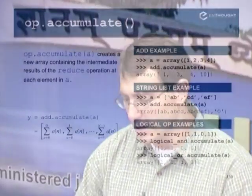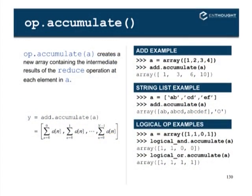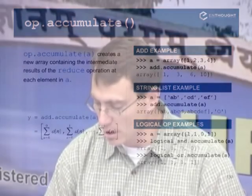You can also do add.accumulate with strings. You sit here and add those up and get the accumulation: AB by itself is the first value, AB accumulated with CD gives that string, and accumulating all gives you the third string.